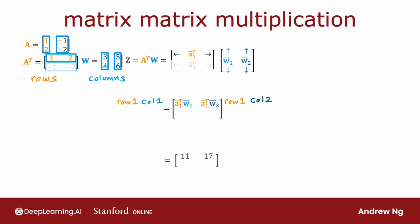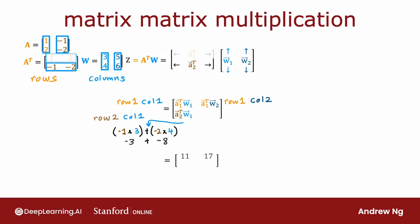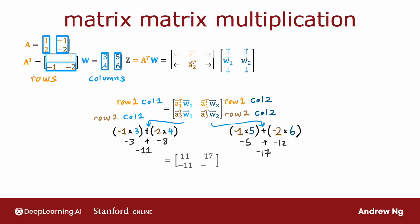Next, let's take A2 transpose and multiply that by W. We have A2 transpose times the first column: negative 1 times 3 plus negative 2 times 4, which is negative 11. Then A2 transpose times the second column: negative 1 times 5 plus negative 2 times 6, which is negative 17. So A transpose times W equals this 2 by 2 matrix with rows 11, 17 and negative 11, negative 17.